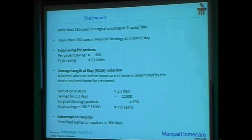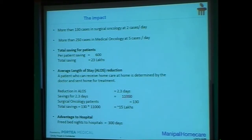What is the impact we had? We broke it down with help of my home care team. About 130 cases of surgical oncology and 250 from medical oncology were analyzed. Per patient, 600 rupees were saved — total saving was 23 lakh. Average reduction in length of stay of even two and a half days saved about 11,000 rupees per patient. In our 130 cases we saved about 15 lakh rupees. Bed days that could have been used for 100 days became 300.